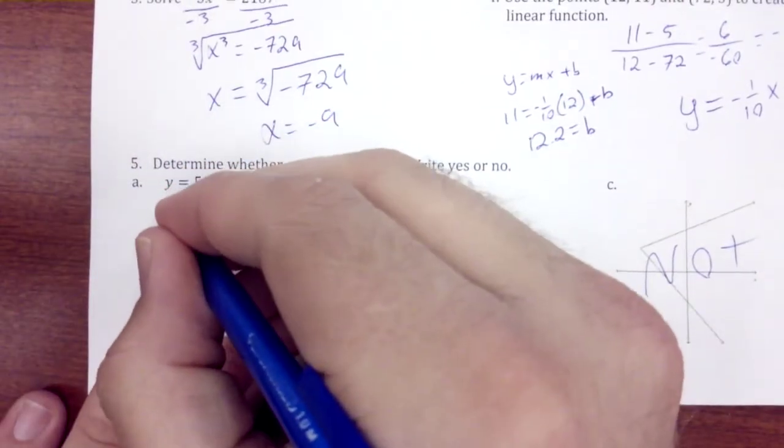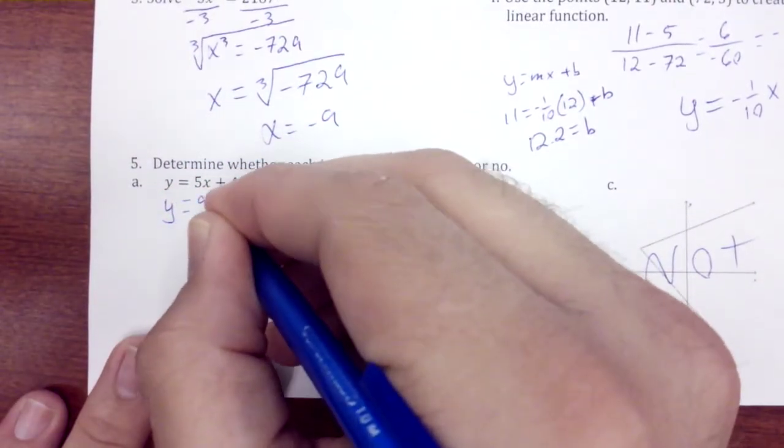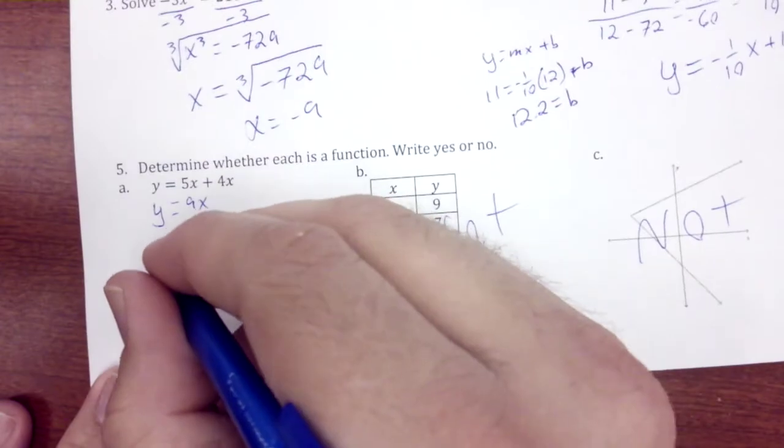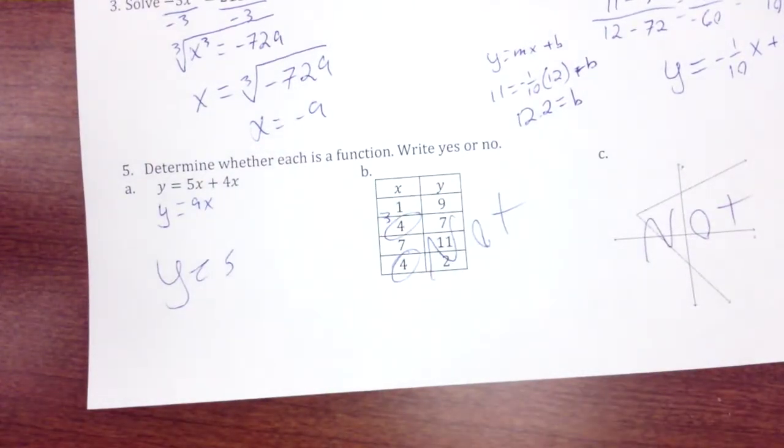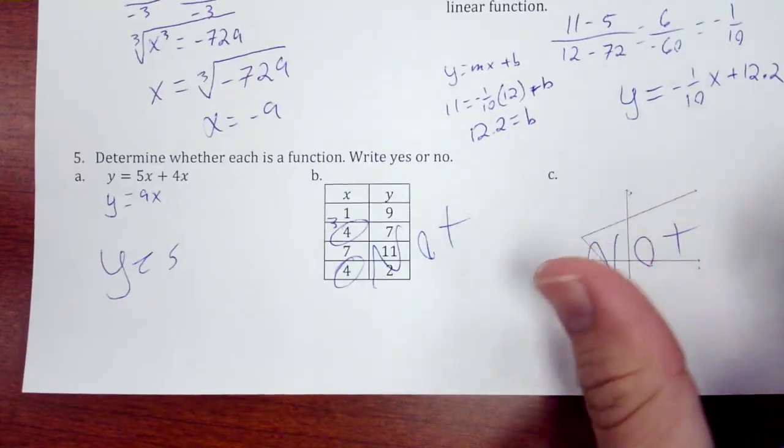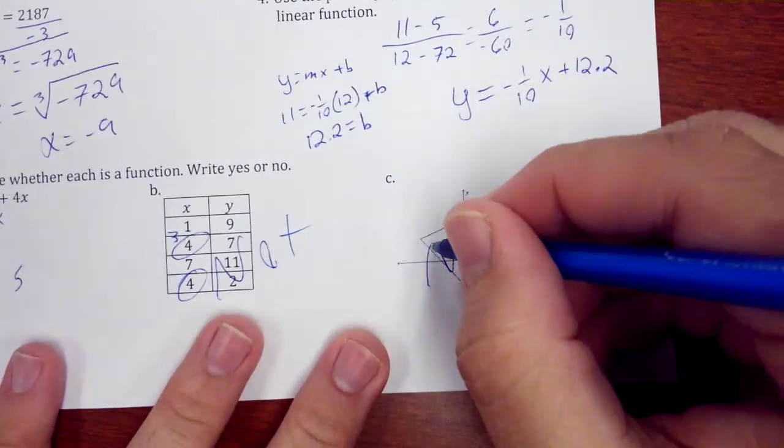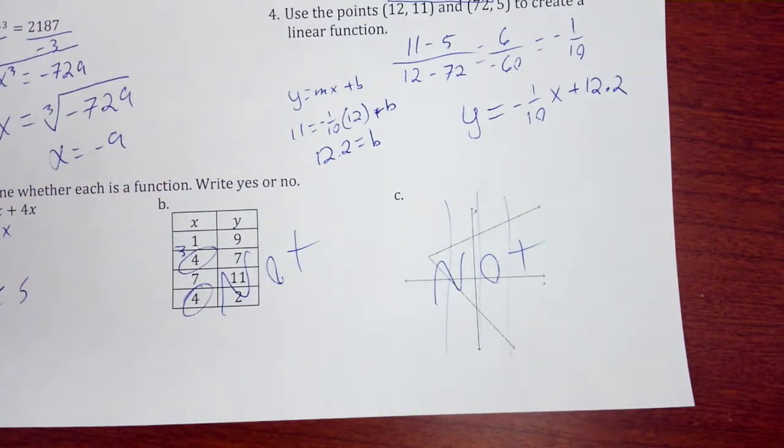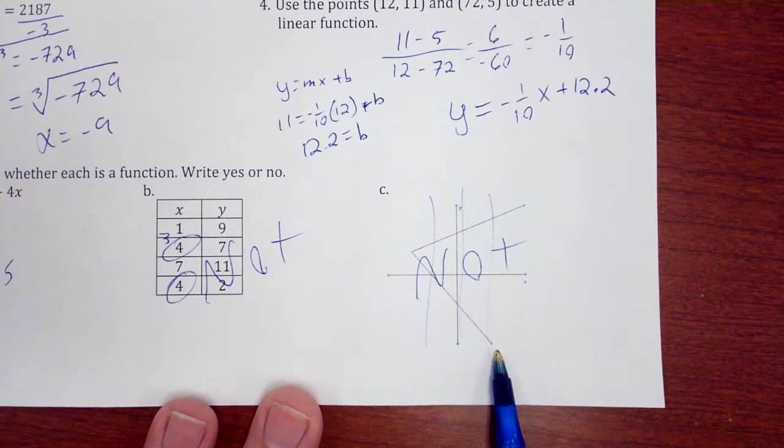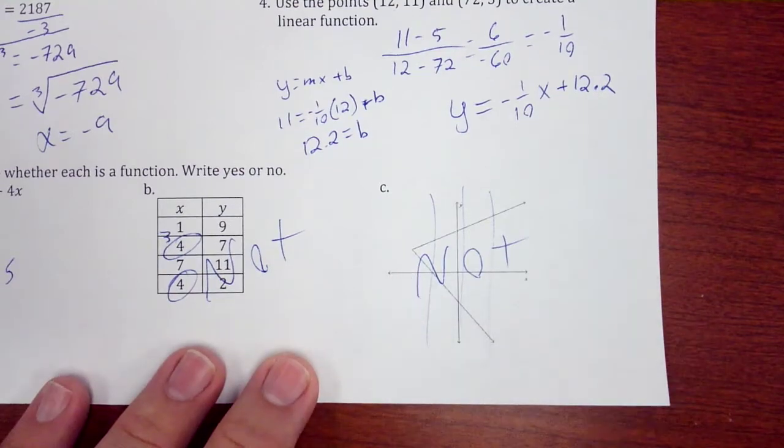And then here, once we simplify, we get yes. So a is, b and c are not. The reason b or c is not is because it can't pass a vertical line test. Any vertical line you draw from here to here or from here on out would be touching the line twice.